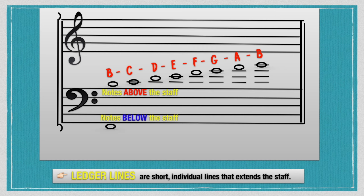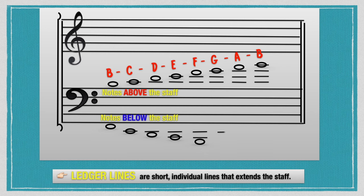Now let's recognize the notes below the bass clef staff. On the space below the bass clef staff is F. The first ledger line below is E, and on the space below it is D. On the second ledger line below is C, and the space below it is B. On the third ledger line below is A, and the space below that third ledger line is G. So below the bass clef: F, E, D, C, B, A, and G.